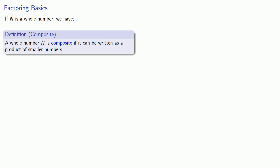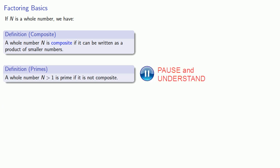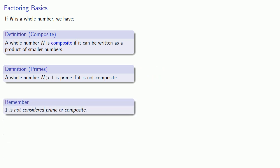Now we can't always do that. So a whole number N greater than 1 is said to be prime if it's not composite. And an important idea here is that 1 is not considered prime or composite. It's a thing by itself.